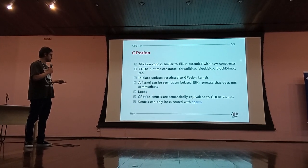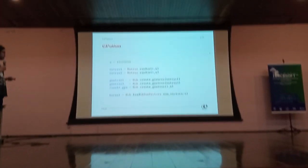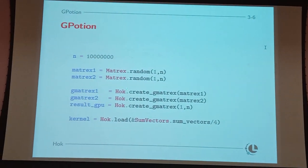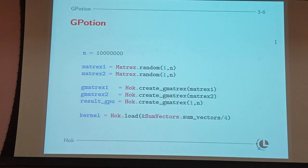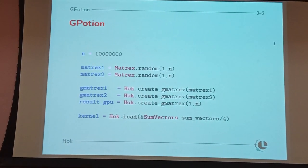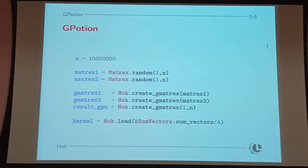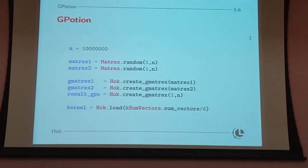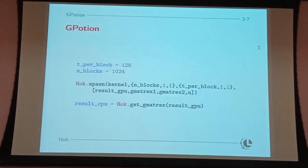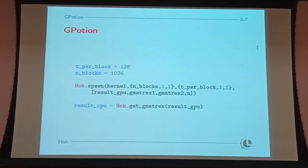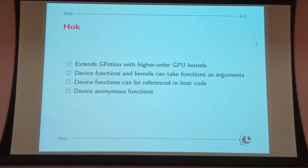Here is an example of a complete program. We create two CPU matrices and send them to the GPU using create gMatrix. We have two matrices to sum using the sum vectors kernel, plus another gMatrix for the result. We load the kernel — not mandatory, but useful if spawning it more than once. We then spawn the kernel, configure the grid, and pass the arguments. After computing, we retrieve the results using get gMatrix. This is the basic language that we are now expanding with HOC.